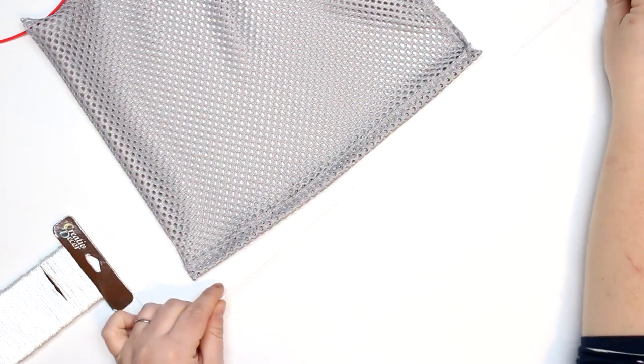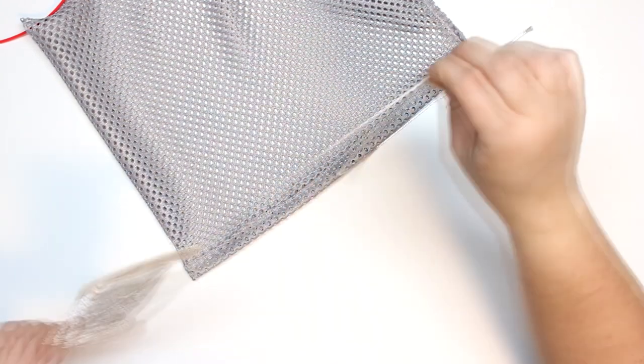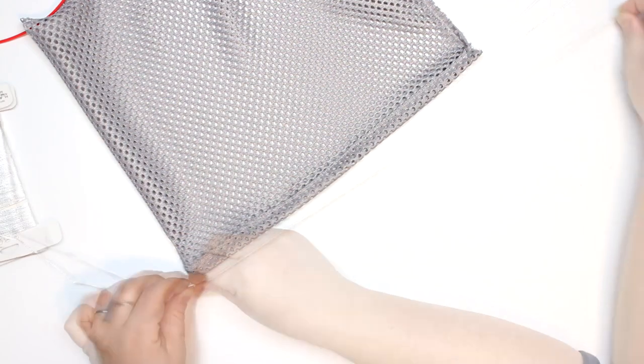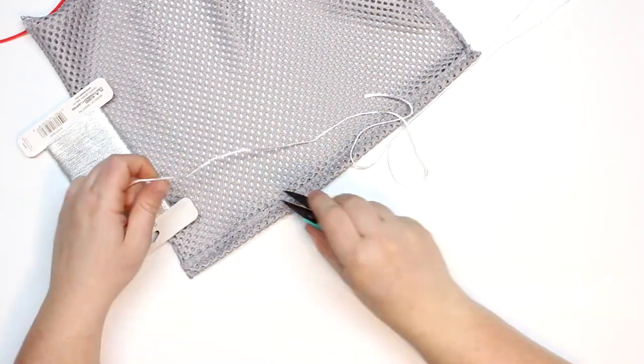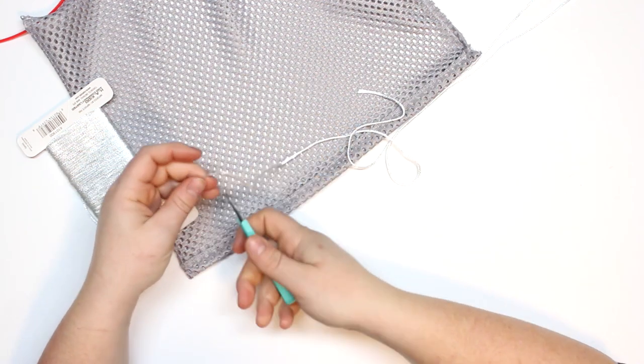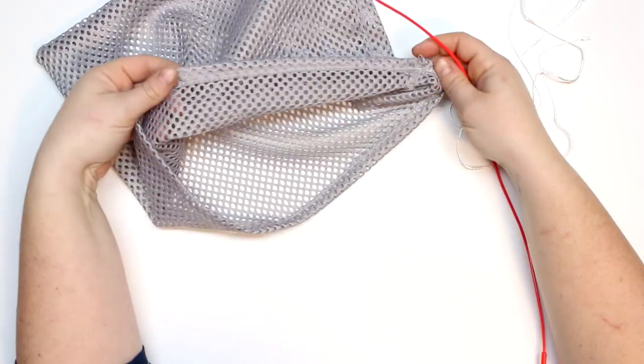That will leave the casing open to be able to thread my cord through. So I'm using this cording here and I'm just going to cut off about three times the length of the opening of the bag.